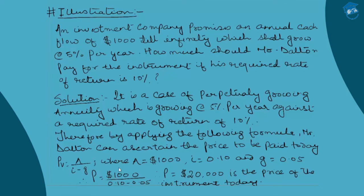Putting the variables into the formula: P = 1000 / (i − g) = 1000 / (0.10 − 0.05) = 1000 / 0.05 = 20,000 USD. So 20,000 USD is the present value of the investment, which guarantees Mr. Dalton a perpetually growing annuity of 1000 USD growing at 5% per year against his required rate of return of 10%.